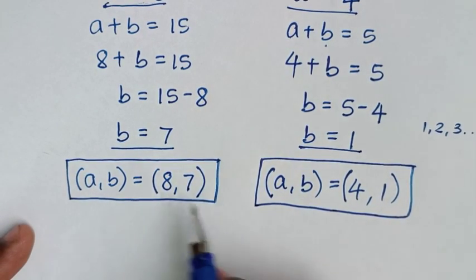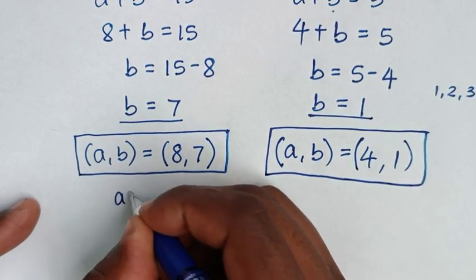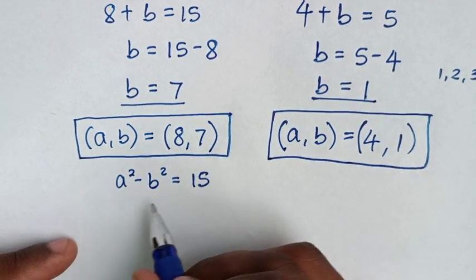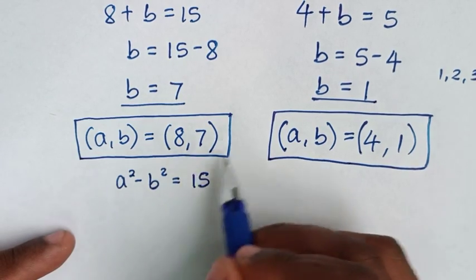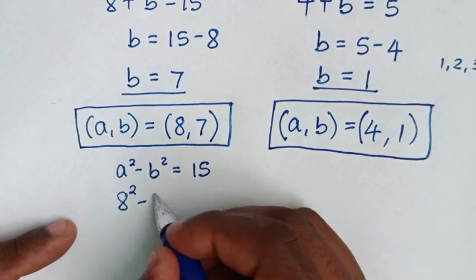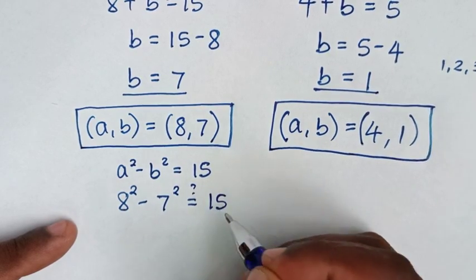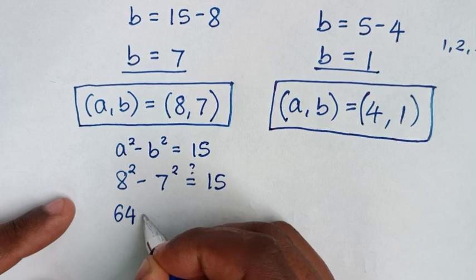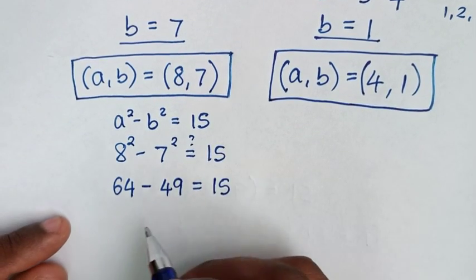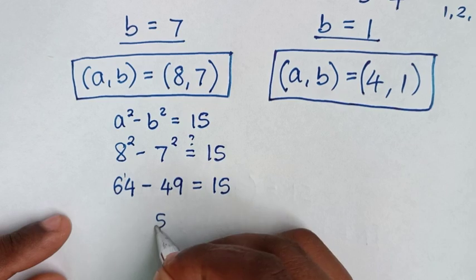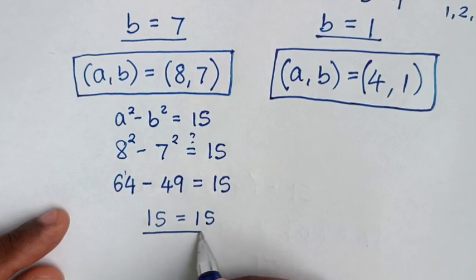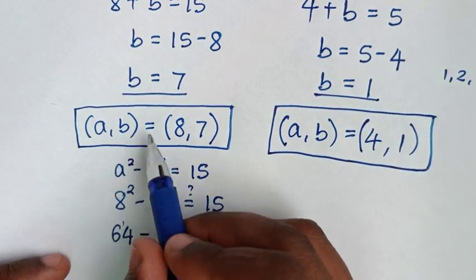Let's verify the solutions. Substituting a equals 8 and b equals 7 into a squared minus b squared equals 15: 8 squared minus 7 squared equals 64 minus 49. Computing: 64 minus 49 equals 15. The left side equals the right side, so the solution (8, 7) is confirmed correct.